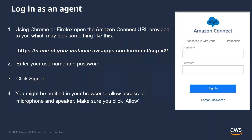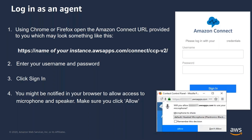To log into the CCP, you need to open your Amazon Connect URL, which may look something like this: HTTPS with the name of your instance, followed by awsapps.com/connect/ccpv2. You need to paste this URL in your Chrome or Firefox browser. You will then need to enter your designated username and password and hit sign in. Once you sign in, you might be notified in your browser to allow access to microphone and speaker.